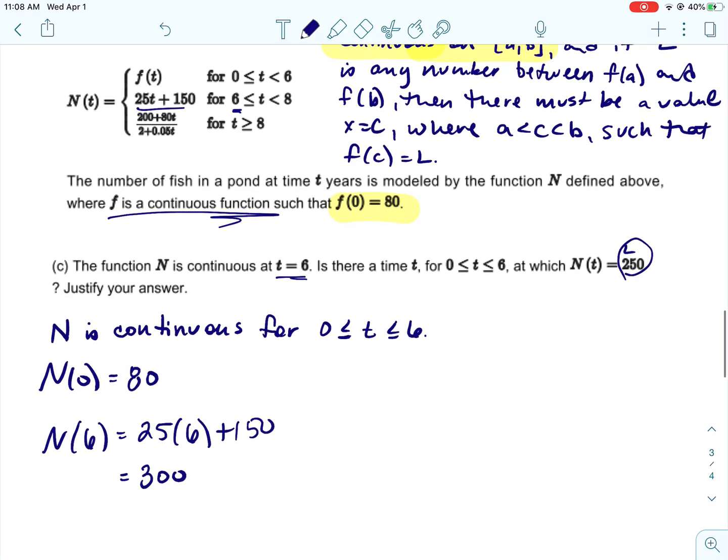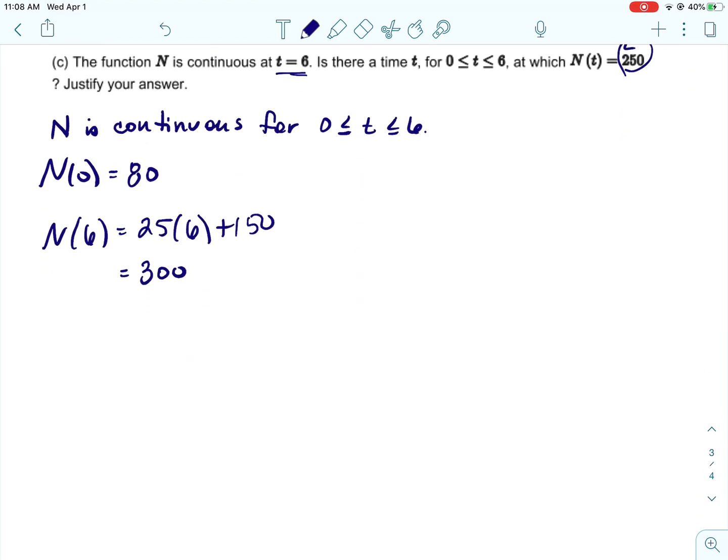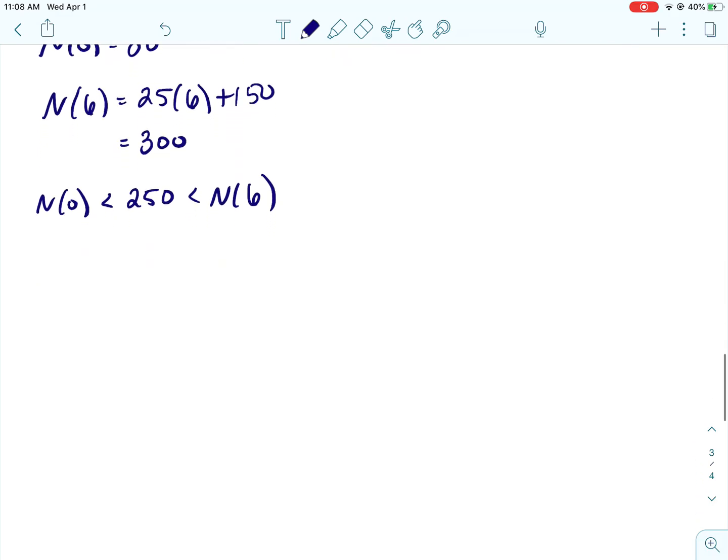Then we know L is going to be, L is the 250. We need to show that it falls in between those two values that we found, and it does. So we would say that N(0) is less than 250 is less than N(6). Then we would need to make sure we mentioned the intermediate value theorem.